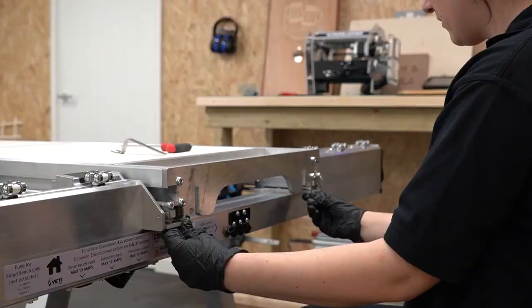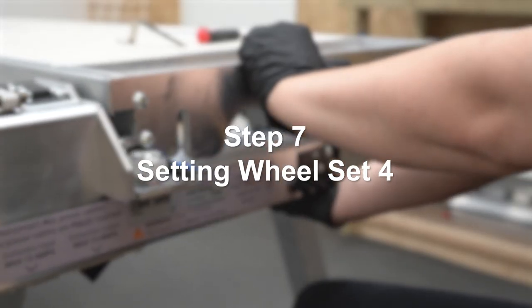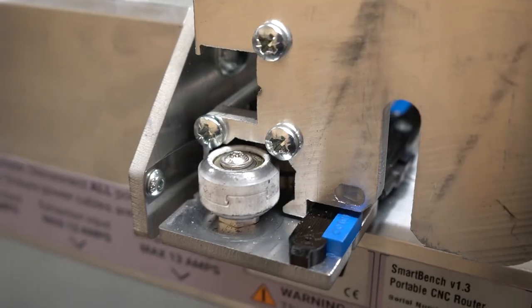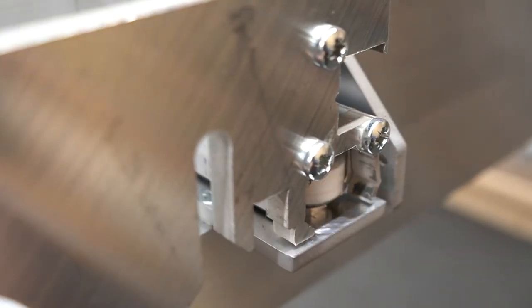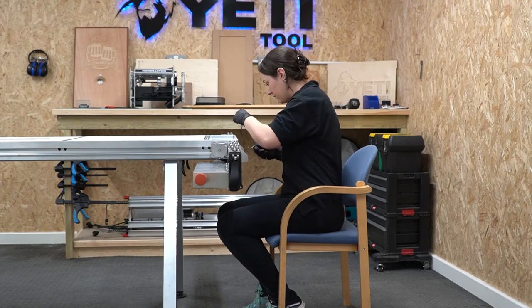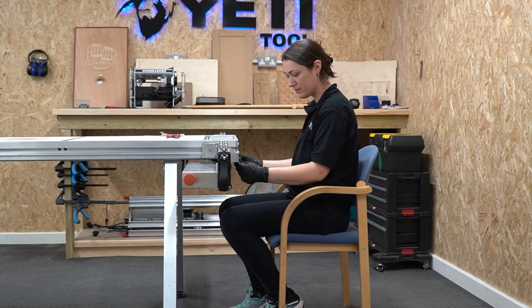Once you're happy with the approach you can once again check the squareness. Now we can move on to wheel set four. Push your X beam into the Y channels and see how your wheels engage. As you can see these wheels are not engaging at all and require more pre-load. Adjust your wheels until they engage securely into the channels then when you're happy complete a final squareness check.